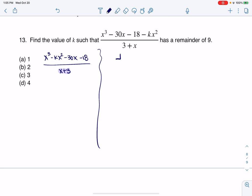Alright, so let's see, I would have put then the negative 3 here, and I would have had 1, negative k, negative 30, negative 18, and keep in mind that when I do the remainder, I'm supposed to get 9, right? That's the key piece here.